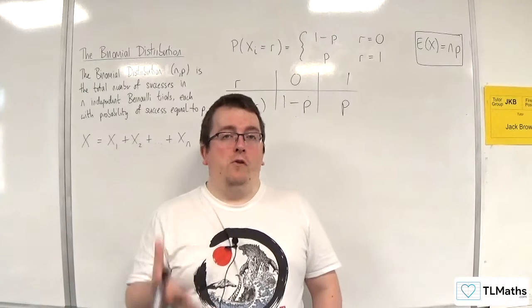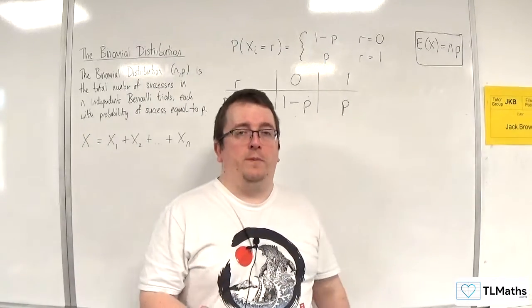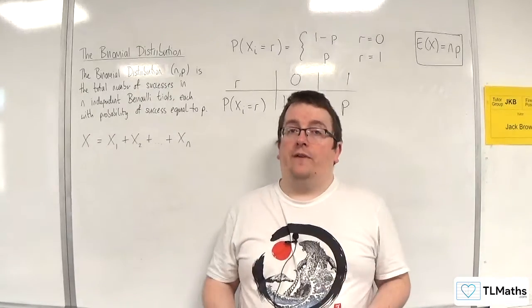In the previous video, I derived that E(X) equals n times p for the binomial distribution. In this video, I want to derive the formula for Var(X).